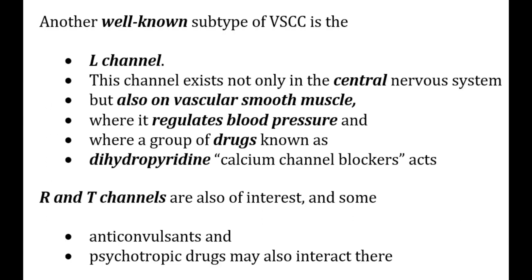Another interesting subtype is the L channel. These channels exist not only in the central nervous system but also on vascular smooth muscles, where they regulate blood pressure and where a group of drugs known as the dihydropyridines, also known as the calcium channel blockers, acts. Two other channels known as the R and the T channels are also of interest as some anticonvulsants and psychotropic drugs interact there.